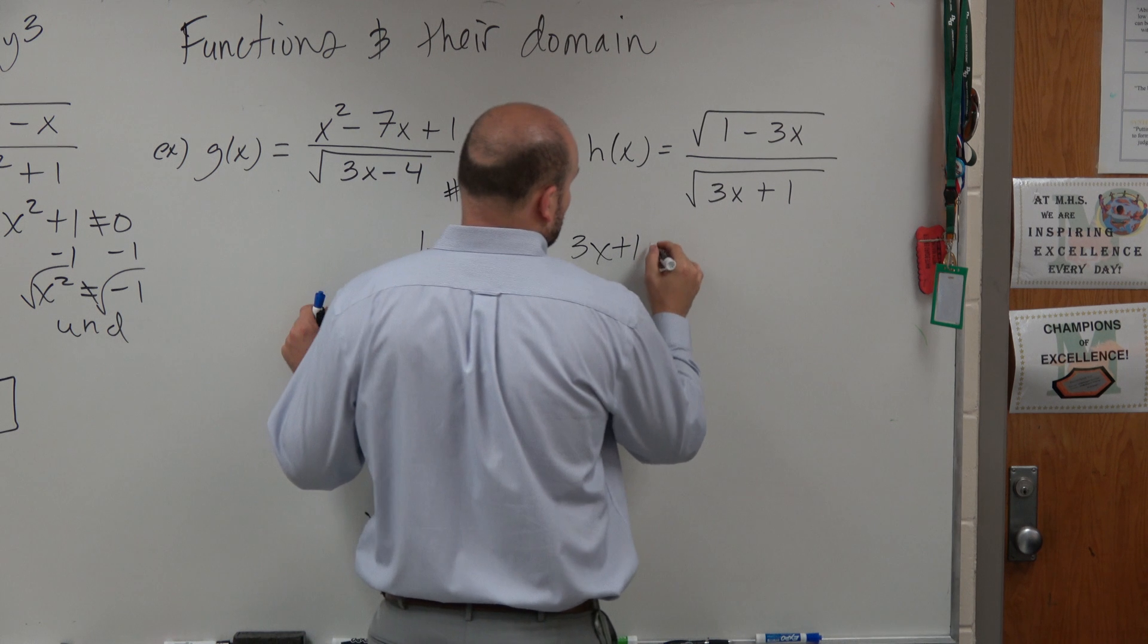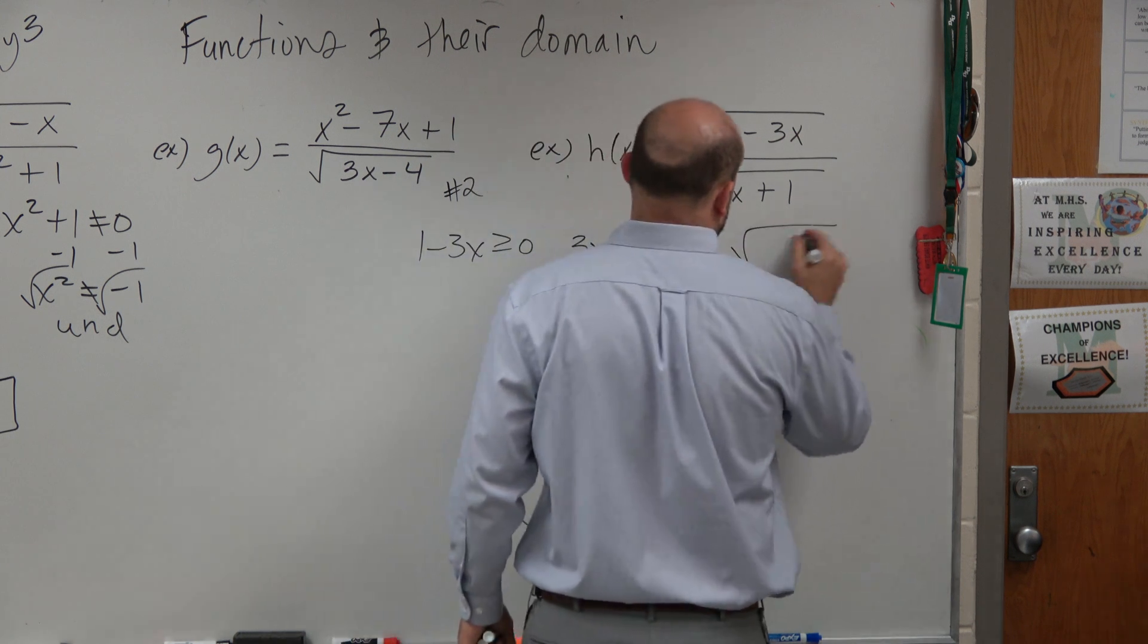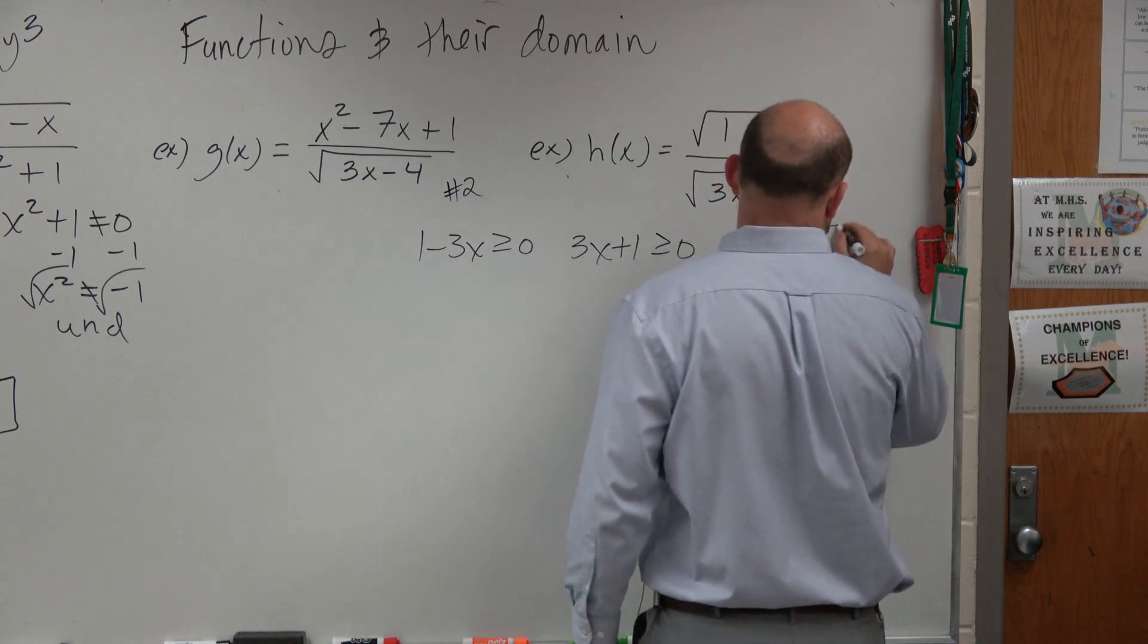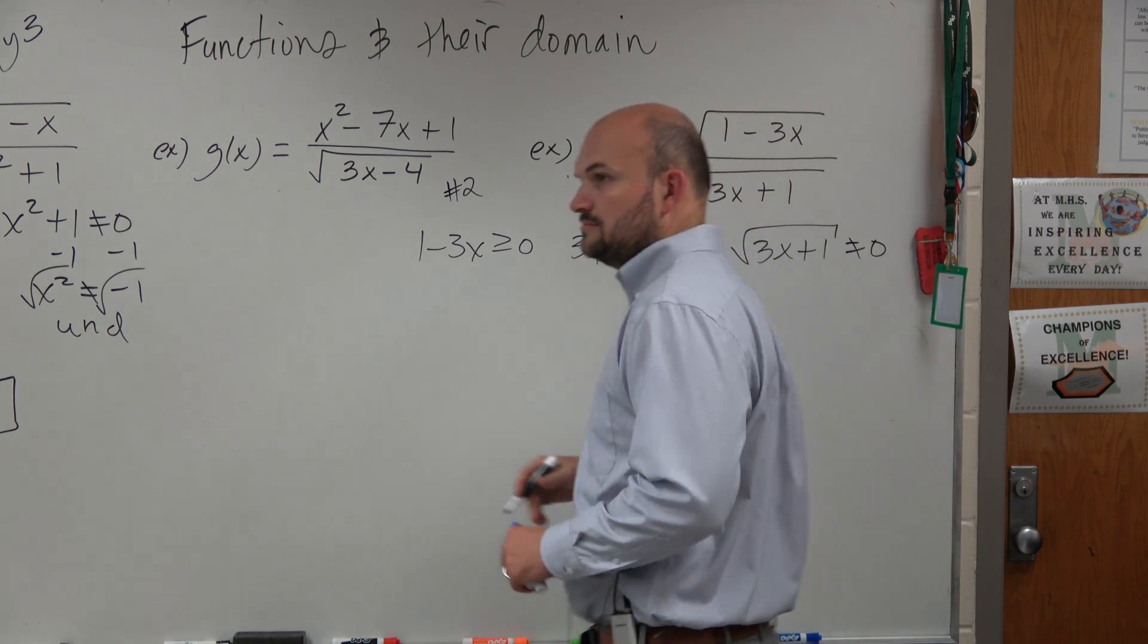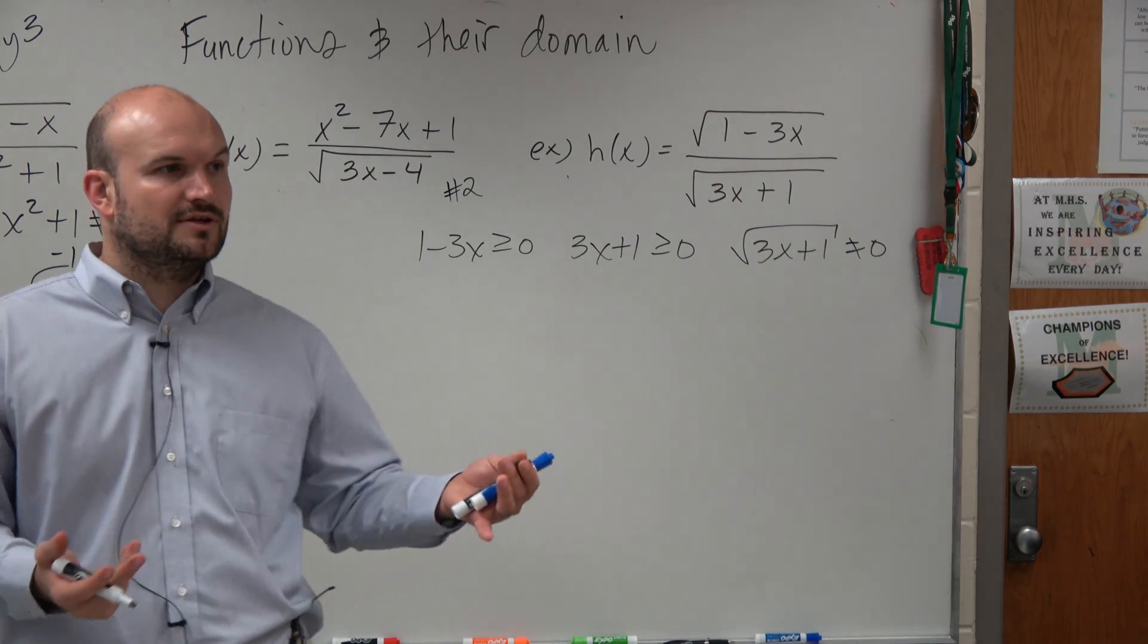We have 3x plus 1 has to be greater than or equal to 0. And square root of 3x plus 1 cannot equal 0. Just immediately go and throw out those constraints.